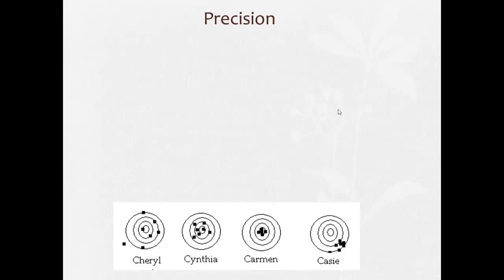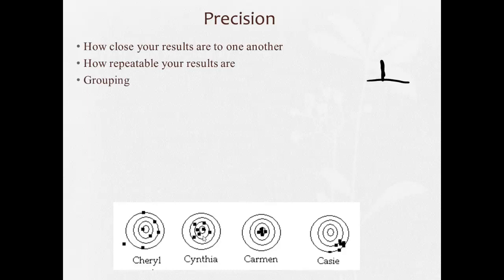On the other hand, precision is how close your results are to one another. Because in science, you always do something more than once. Or how repeatable your results are. You know, like you flip a coin and it lands on end, well, good luck trying to do that again. It's not very repeatable. Going back to our target shooting here, it's like grouping. So something that's grouped is precise. Something that is not grouped would be not precise.